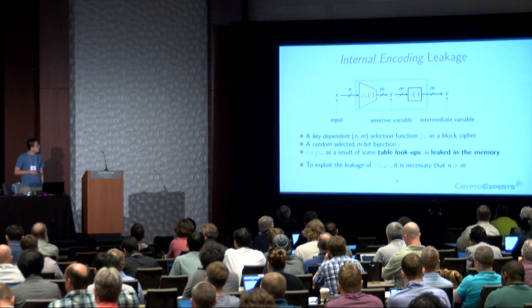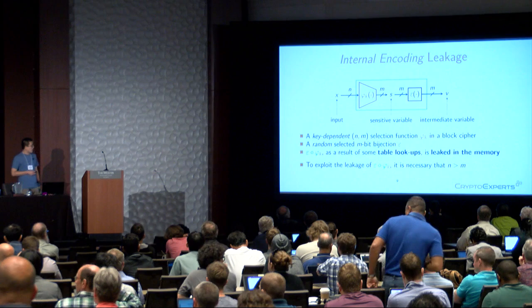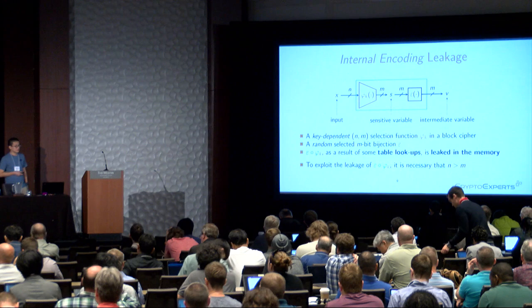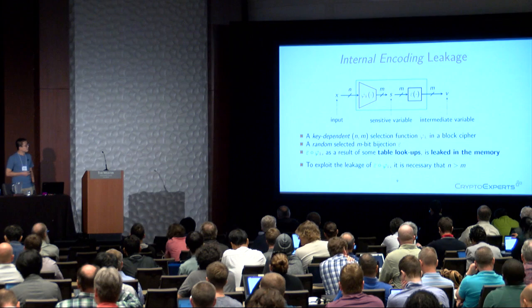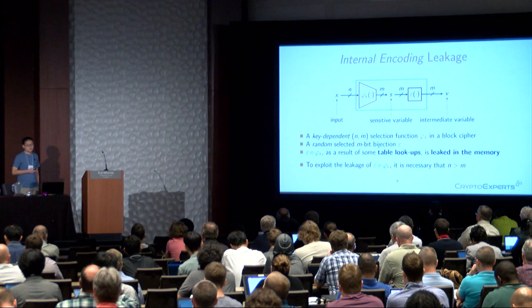The leakage in this setting is modeled as follows: we have an n-bit input and m-bit output selection function f_k, which is key-dependent. An m-bit random encoding epsilon is applied onto this selection function, and the composition of epsilon and f_k is leaked in memory as several table lookups. To use this leakage, it is necessary to have n greater than m; otherwise, the composition is independent of k and we cannot recover any information about k.